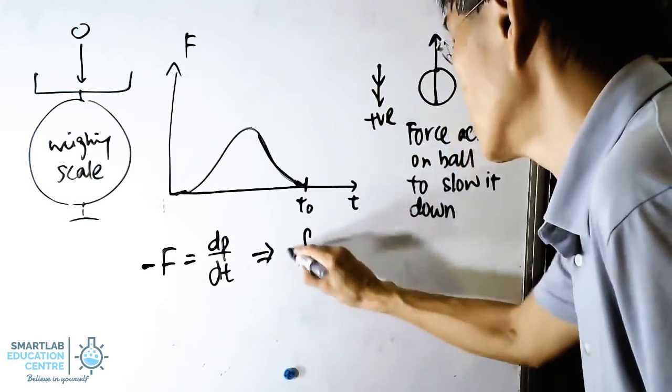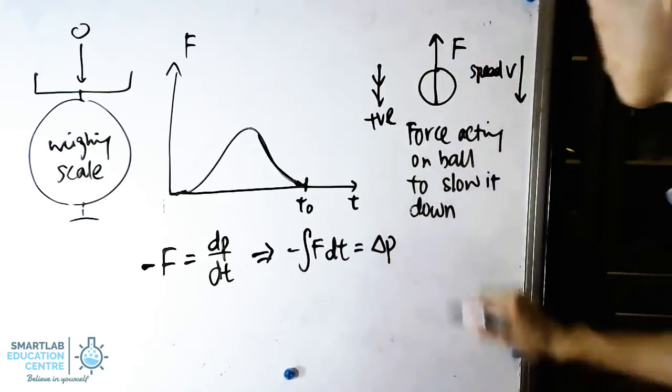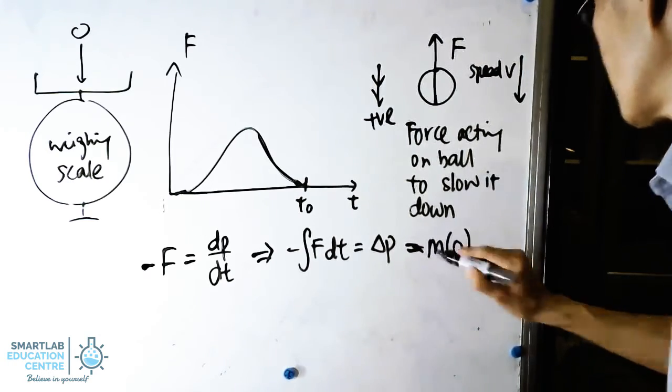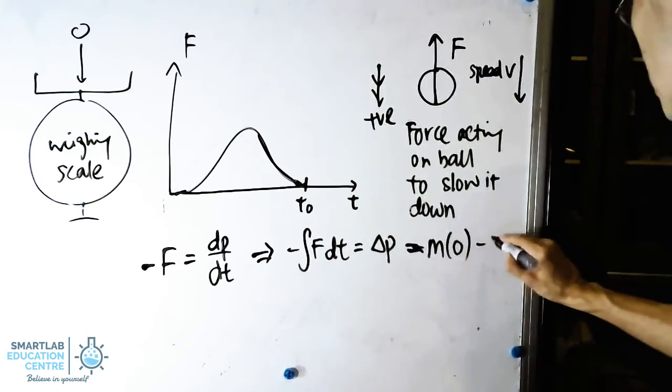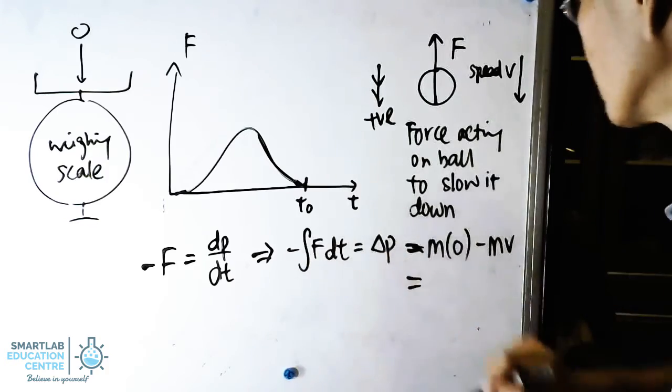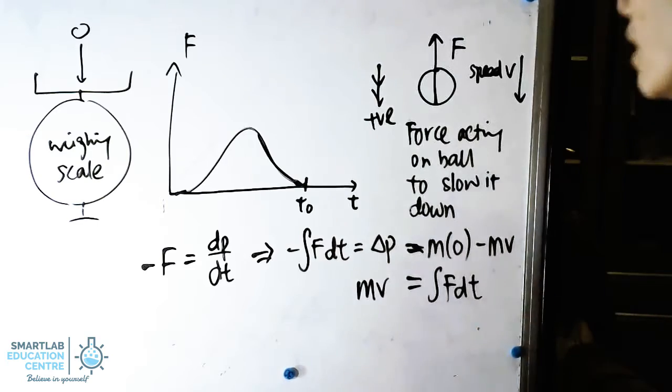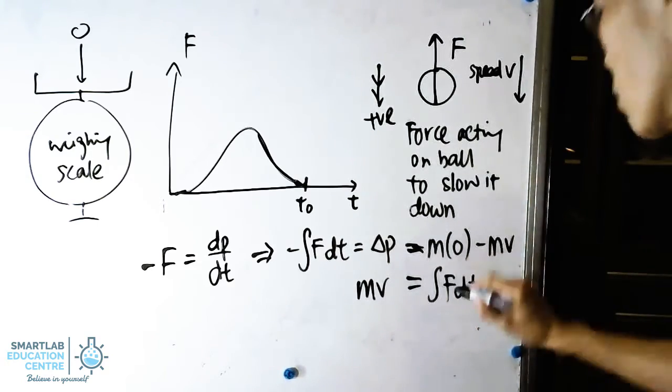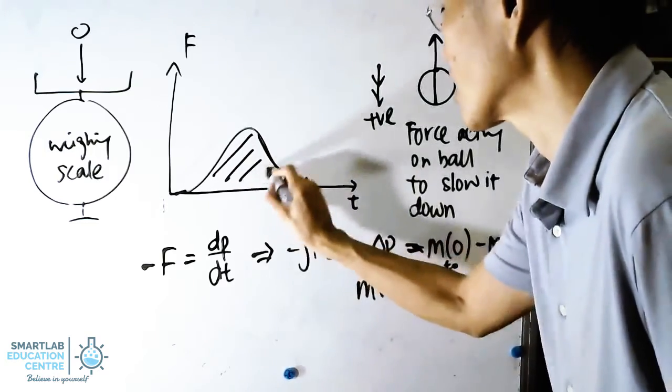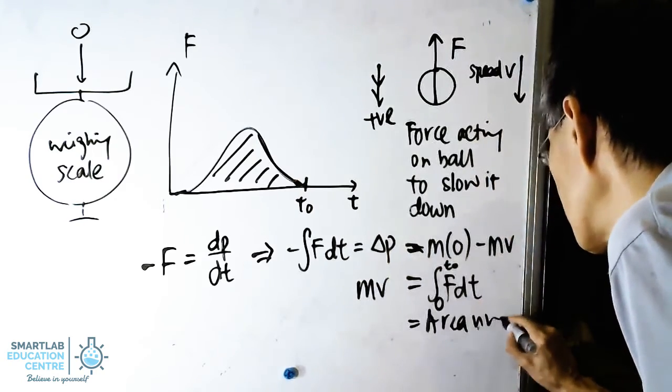So from here, we can actually have this, which is equal to change in p, and the change in momentum because the final speed is actually zero. So the initial speed is actually v. So in this case, the negative and negative will negate each other. So mv is equal to integral of ft. So integral of ft will actually be from time basically zero to t naught, which is actually the area under the graph. So in a nutshell, this will be equal to the area under the ft graph.